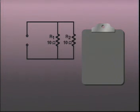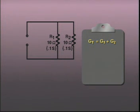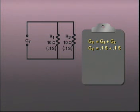If we now were to add a second 10 ohm resistor in parallel with the first, we could say that a second conductive path of 0.1 siemens was added to the circuit. The total conductance in the circuit, G sub T, would then be equal to G1 plus G2. For this circuit, G1 is 0.1 siemens and G2 is 0.1 siemens, which equals 0.2 siemens.